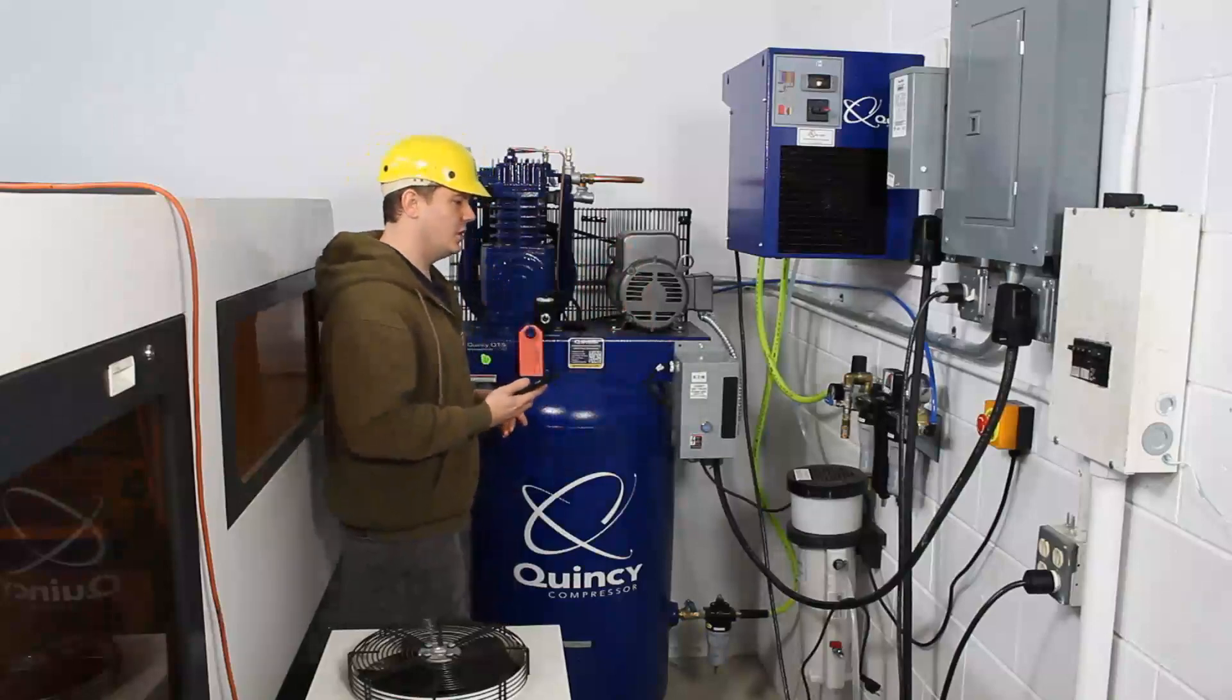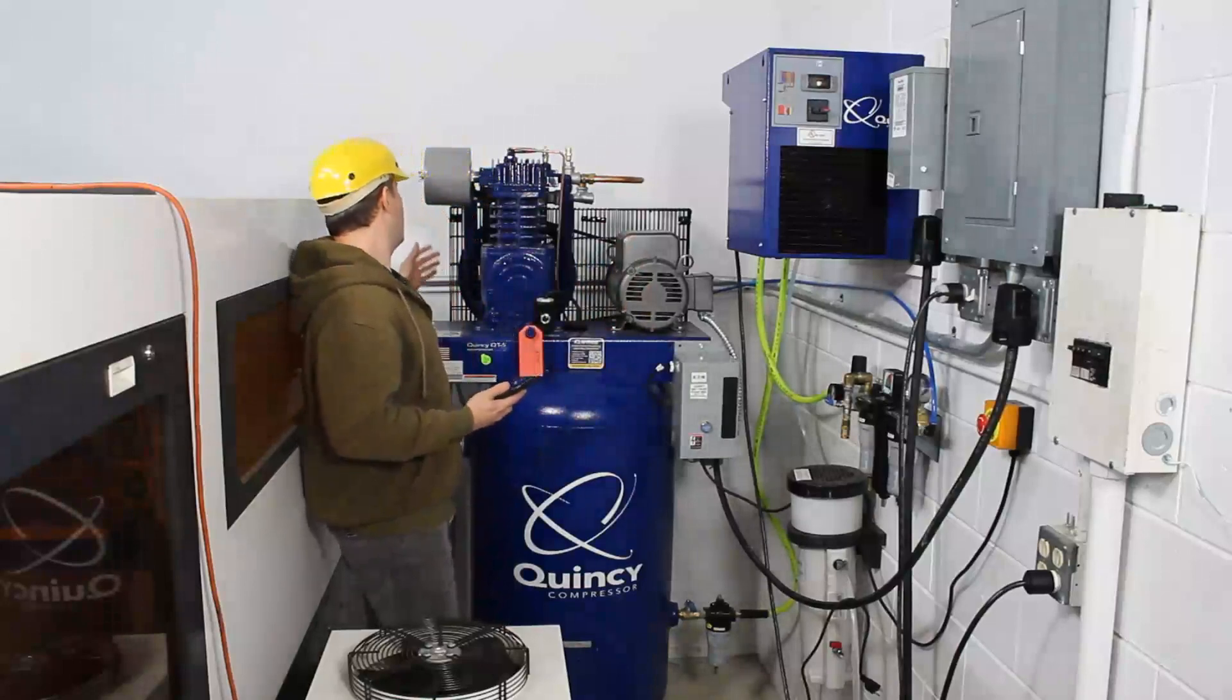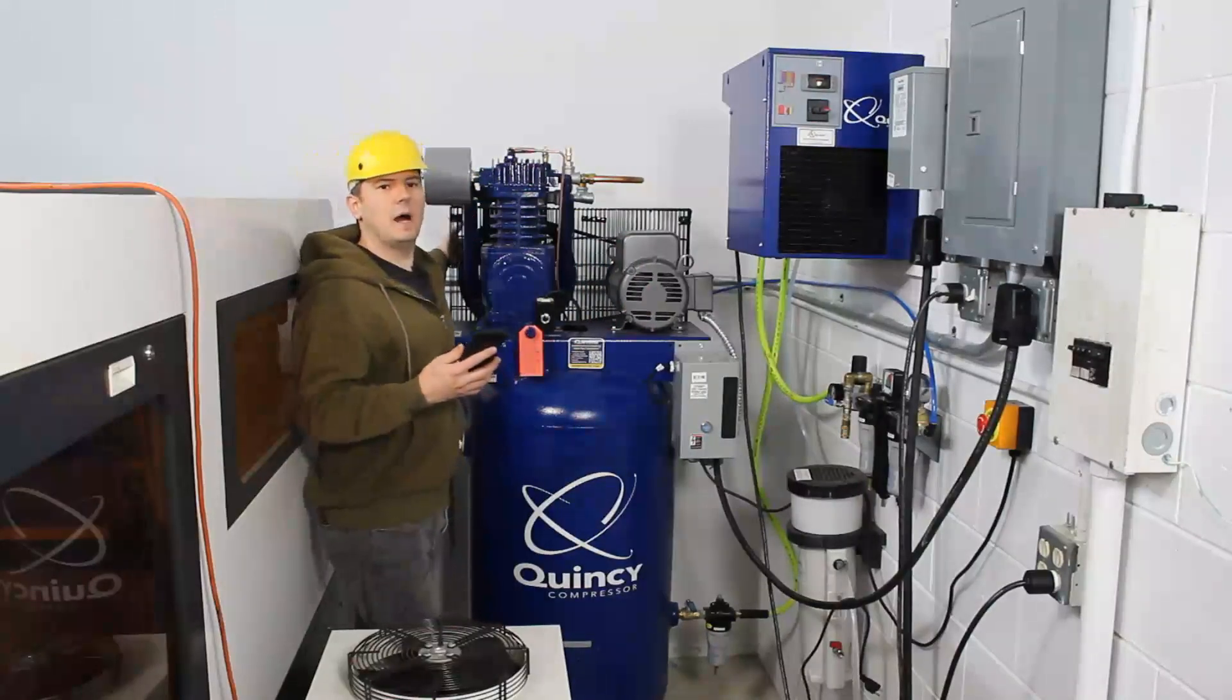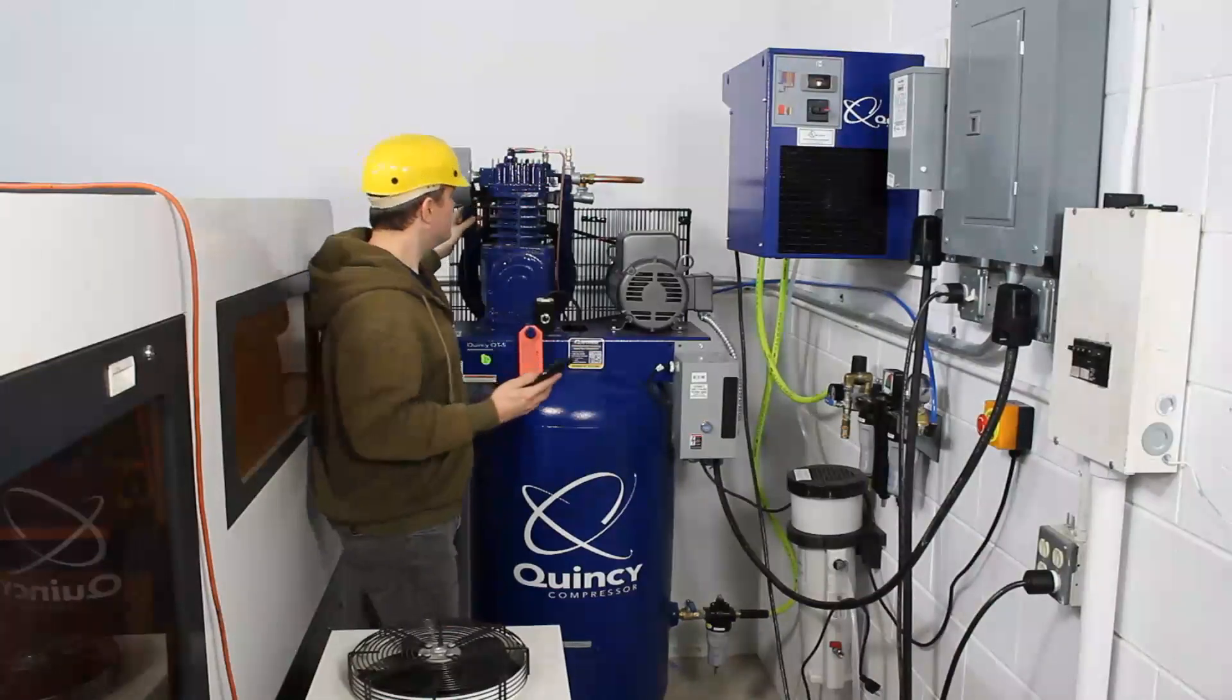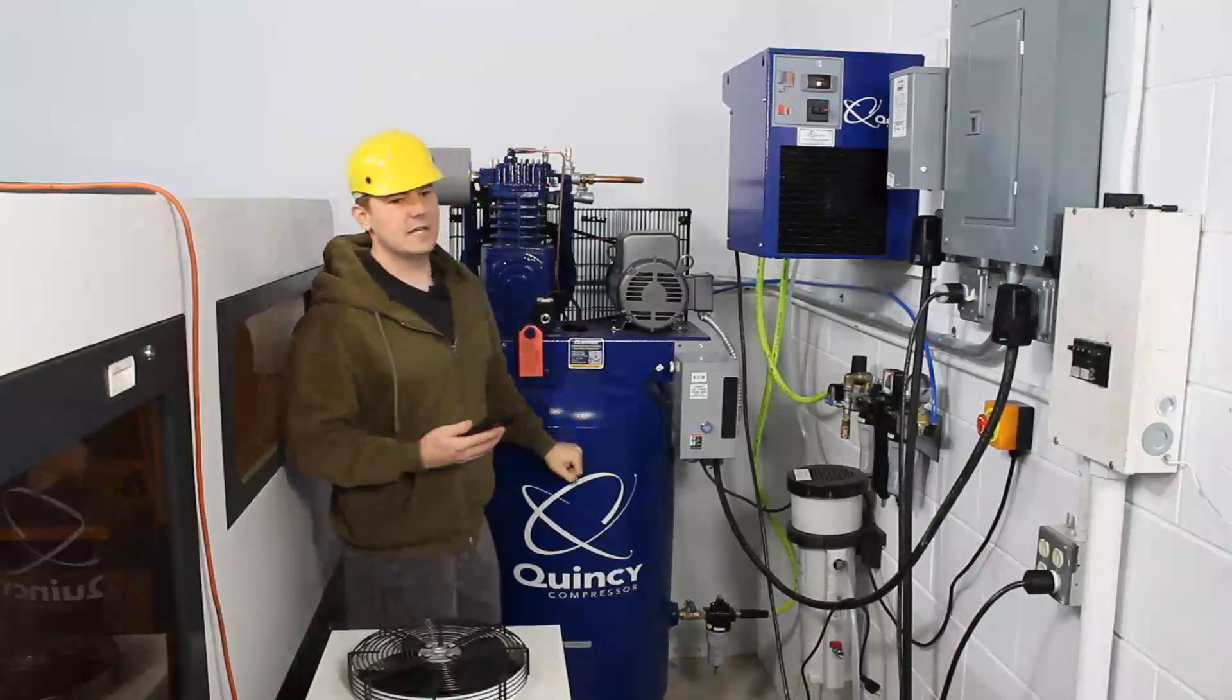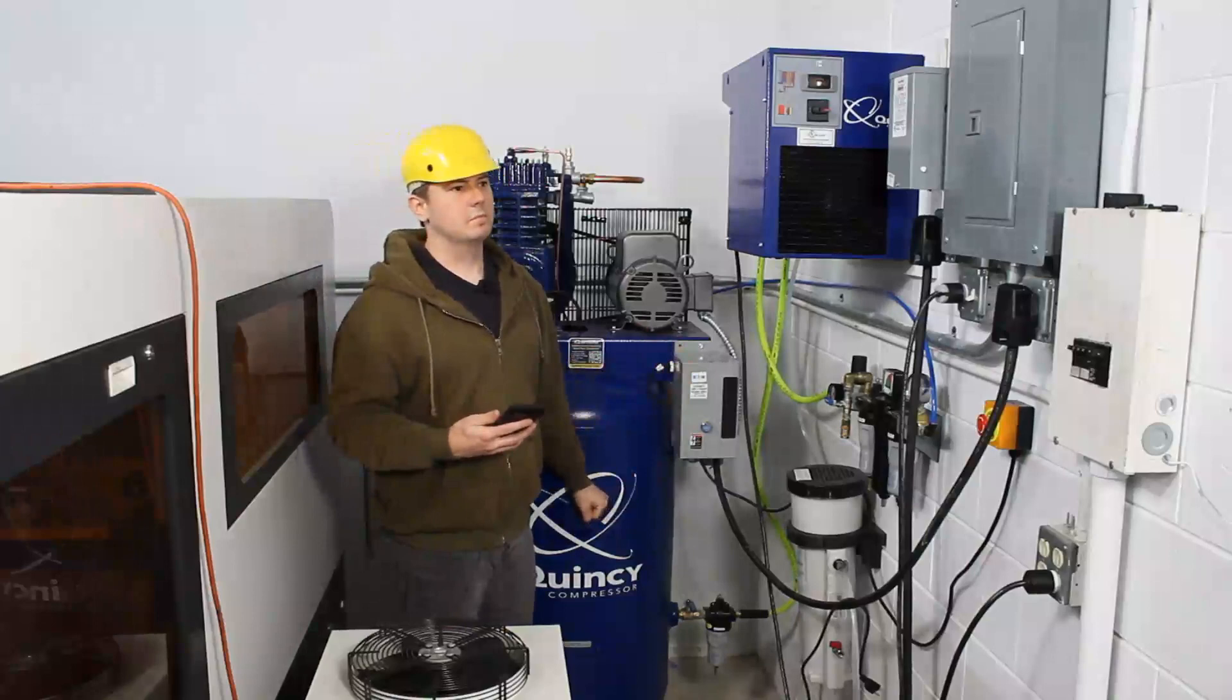So some of the additional add-ons that we did that we do feel is necessary, we have an intercooler behind. You probably can't quite see it. It's a radiator unit that pre-cools the air right after compression. This is the 80 gallon tank model. I would not recommend going any smaller, you want to have a nice big tank.